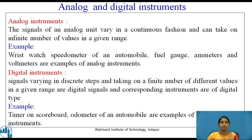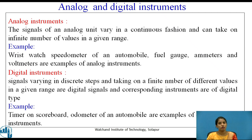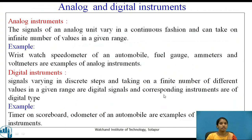Analog and digital instruments. The signals of an analog unit vary in a continuous fashion and can take on an infinite number of values in a given range. Examples include wristwatches, speedometers of automobiles, fuel gauges, ammeters and voltmeters. Digital instruments have signals varying in discrete steps, taking on a finite number of different values in a given range. Examples include the timer on a scoreboard and the odometer of an automobile.